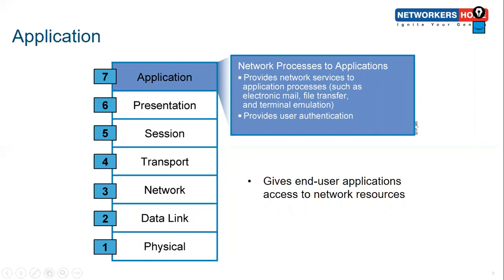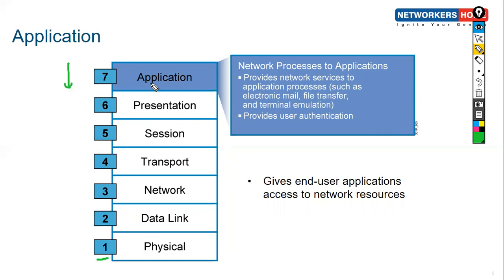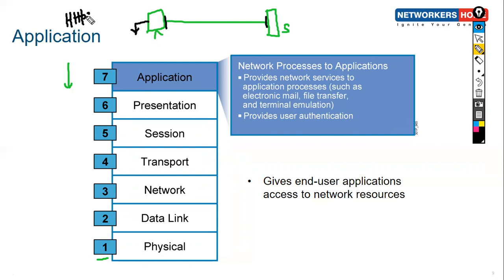We'll discuss OSI starting from L7. Consider a PC communicating with a server — if you send an HTTPS request, the communication always starts from L7 first, then goes L6, L5, L4, L3, L2, and L1. That's why we start from the Application layer.